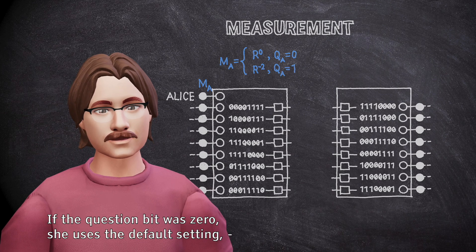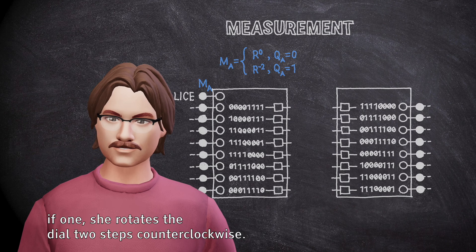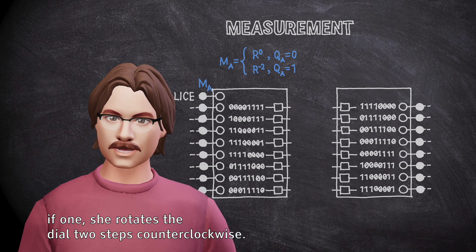If the question bit was zero, she uses the default setting. If one, she rotates the dial two steps counterclockwise.